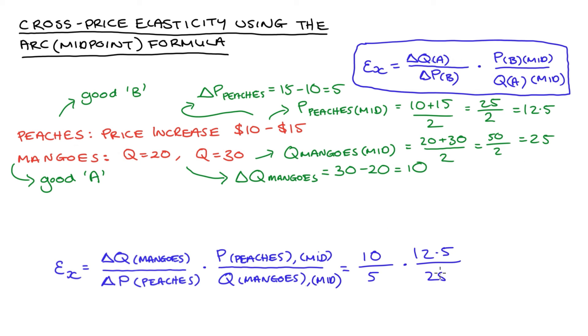Now just solving this, we get 10 times 12.5 is 125. 5 times 25 is also 125, so we actually end up with a cross-price elasticity of demand equal to 1.